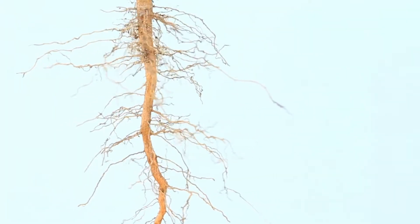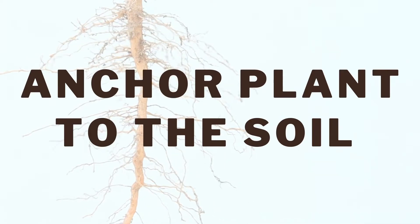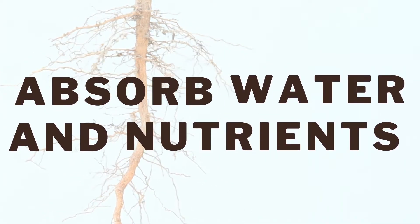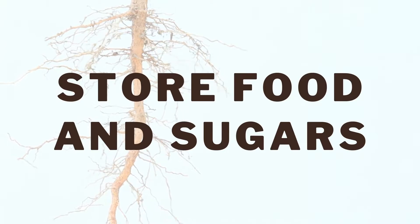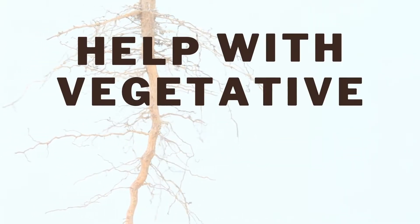Roots have four primary functions: to anchor the plant to the soil, absorb water and nutrients into the plant, store the plant's foods and sugars, and in some plants, help with vegetative reproduction.